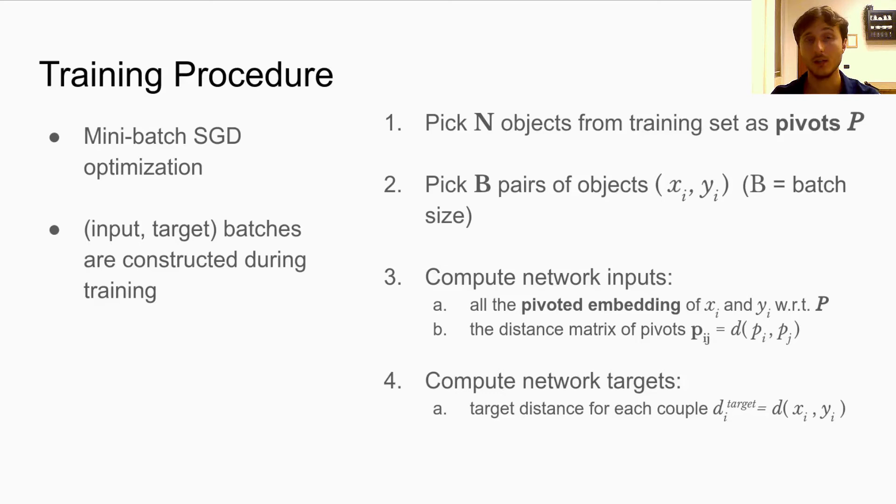And then we compute the network inputs, that are the pivoted embedding of all the objects in the pairs with respect to the pivots, and then the distance matrix between the pivots. And finally, we compute also the network targets, that is, the distances between the two elements in each couple, in the original metric space.